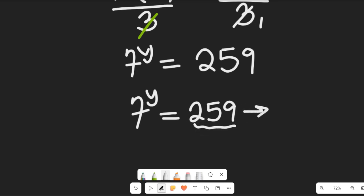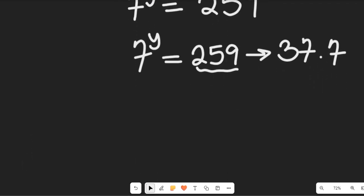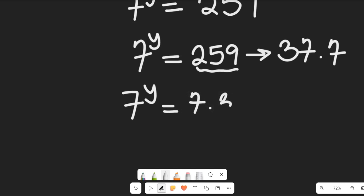Now to break this into factors, this can give us 37 multiplied by 7. So we can replace that with 37 multiplied by 7.